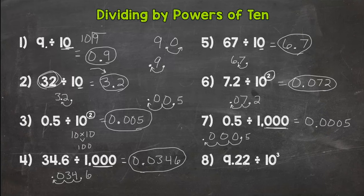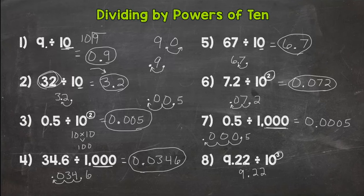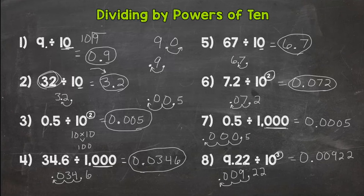Let's wrap it up with number 8: we have 9 and 22 hundredths divided by 10 to the third. An exponent of 3 means move the decimal three times. What do you think 10 to the third power equals? 10 times 10 times 10 — hopefully you are thinking 1,000. So 10 to the third power is the same thing as 1,000. Move the decimal three times — 1, 2, 3. Fill with placeholder zeros, and we end up with 922 hundred-thousandths. And I forgot to circle my answer for number 7 too.